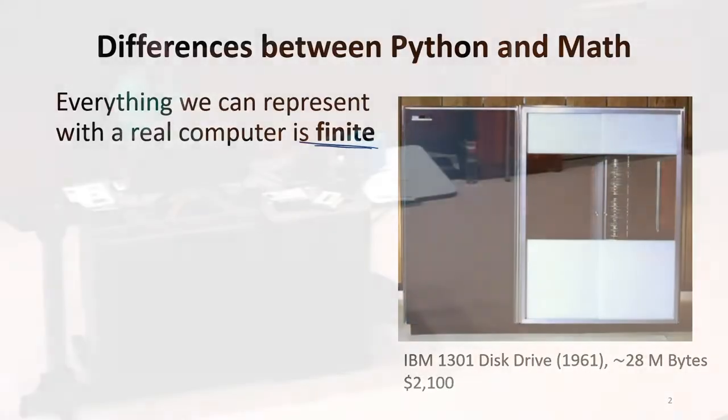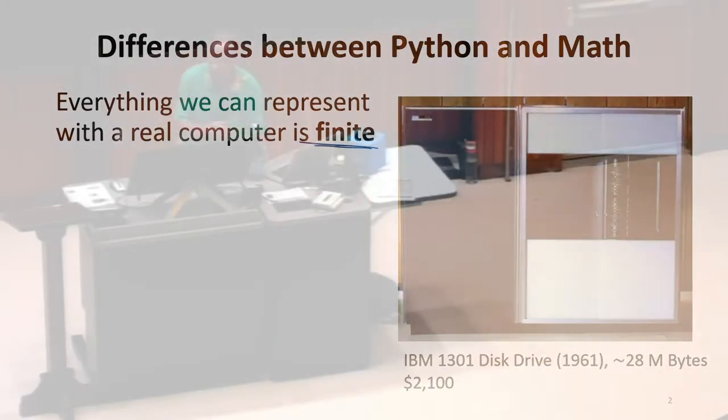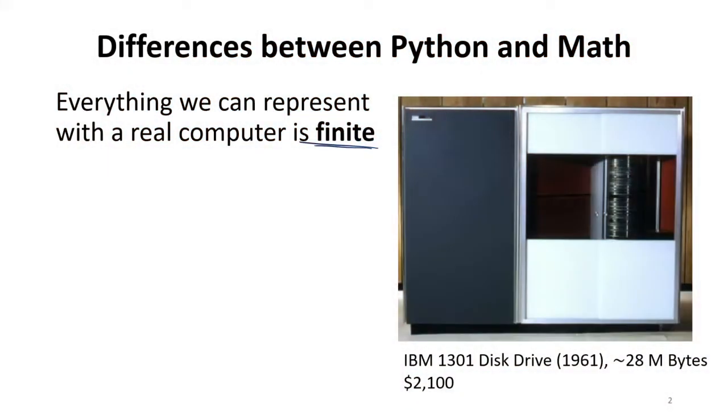...like the natural numbers, we're talking about unbounded values. And the amount of memory you have in a computer may seem kind of infinite. When this disk drive came out and people first were getting it, having 28 million bytes seemed pretty close to infinite for people in 1961. I should mention this price, that was per month.